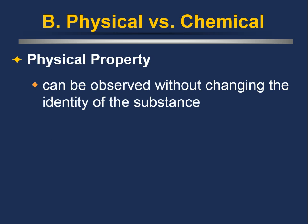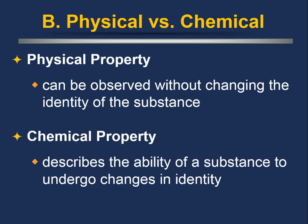A physical property is a property that you can observe without changing the identity of the substance. A chemical property describes the ability of a substance to undergo changes in its identity. If you can observe a property in action without the chemical changing, that's a physical property. If the chemical does change, it's a chemical property.